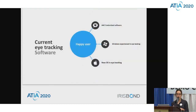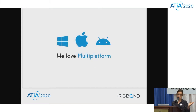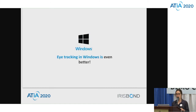Let's talk about the software. We always say we have to have a lot of software, it has to be customizable, all the options for the users. If we look at Windows, we have been doing that for a lot of years. But what happens with other operating systems? We've been eye gaze only for Windows — that's a little bit limited. Today we can say that we love multi-platform, and that eye tracking in iOS is possible, eye tracking in Android is possible, and of course eye tracking in Windows is possible, and it will be even better.